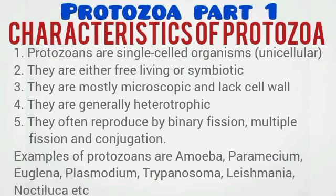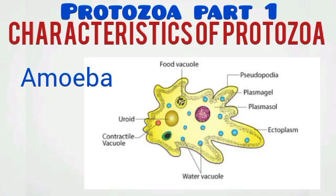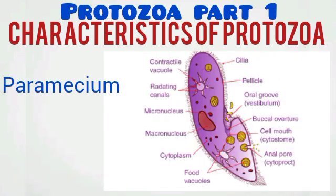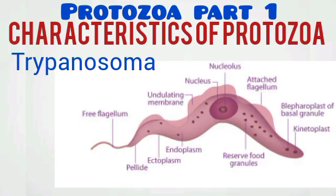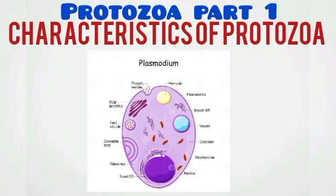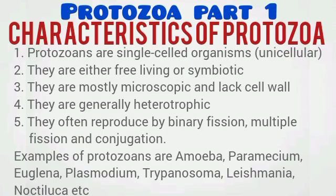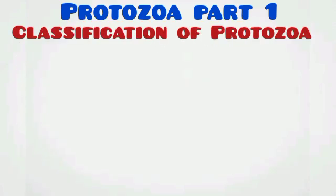This concept of reproduction will be explained in a separate video. Examples of protozoa include the amoeba, the paramecium, the euglena, trypanosoma, plasmodium, noctiluca species, and the spongia species.